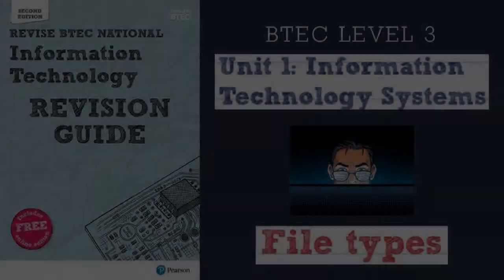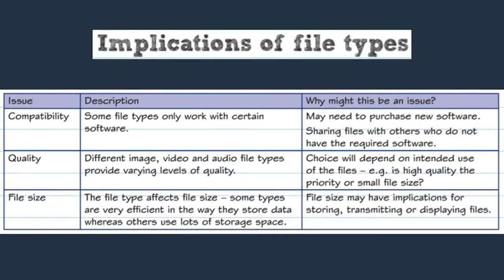The first issue is compatibility, because some files don't work with certain types of software. Another factor that might influence your choice of file type is the quality of the file, which might be an issue for photographers and videographers. A third implication is the size of the file. The type of file will depend on the person — a photographer will need a different type of file compared to someone saving a database. The photographer might focus on quality, whereas the person saving the database might focus on compatibility.